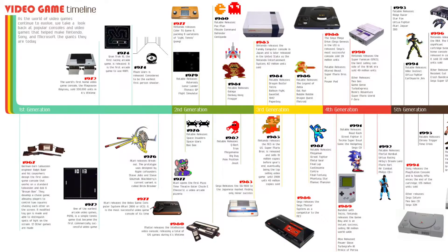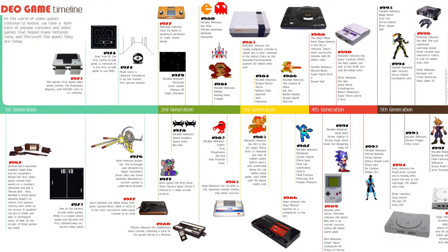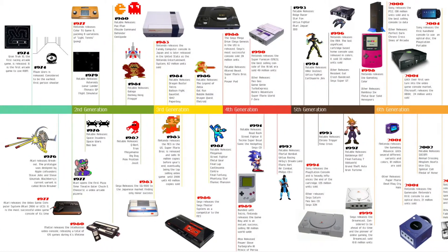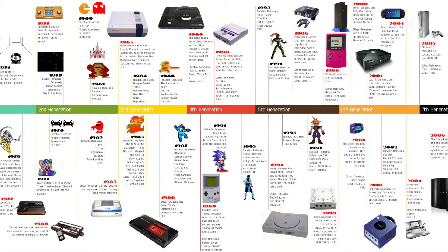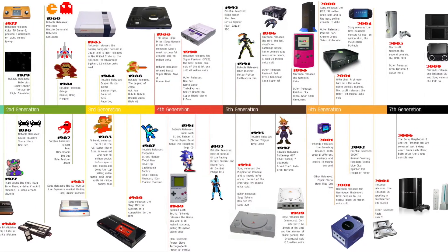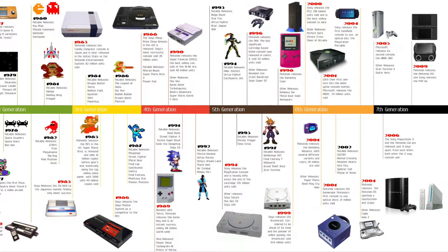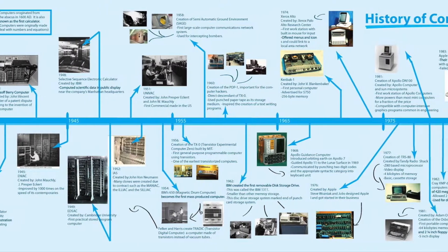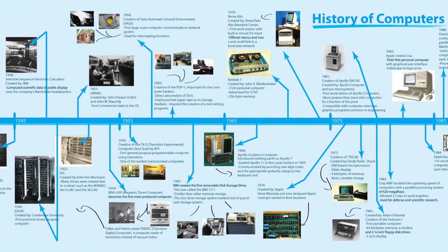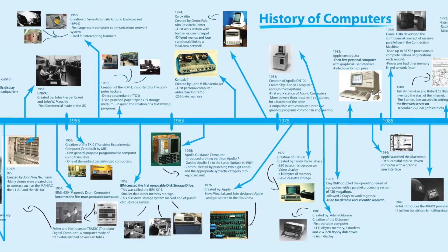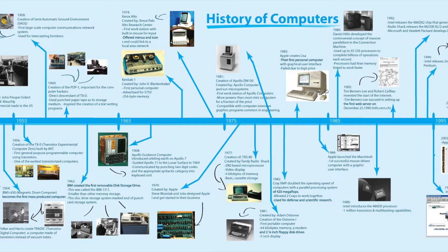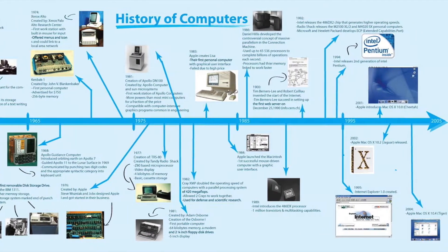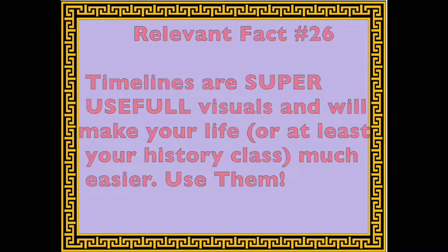Here are two examples of real timelines. The first is a timeline of video games — notice how it's divided into different time periods called generations, which I'll briefly discuss. The second is a timeline about the history of the computer. Note how every event has a title, the year it happened, and a short description or extra information. Sometimes, as in these two examples, there are also pictures.